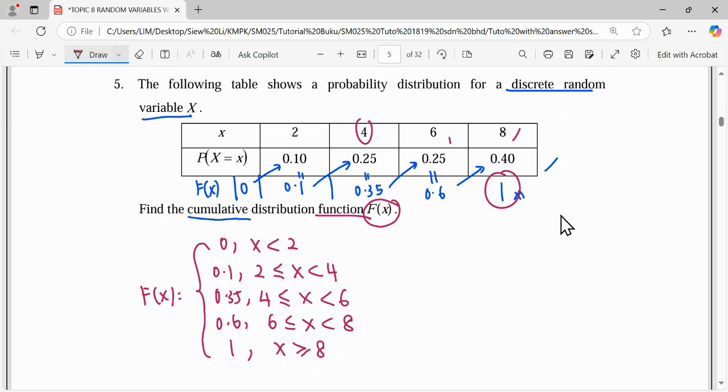So after that, your probability has already reached maximum. Therefore x equals 8, which is the highest value, we have a probability of 1. So that's all for this question. Thank you for watching.